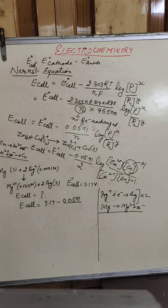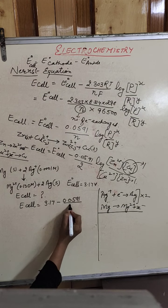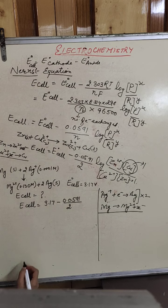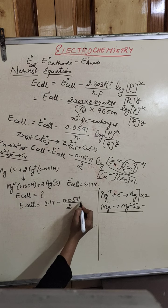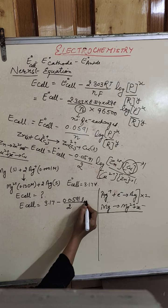After balancing the equation by multiplying through by 2, the total exchange of electrons is 2. Therefore the N value is 2.